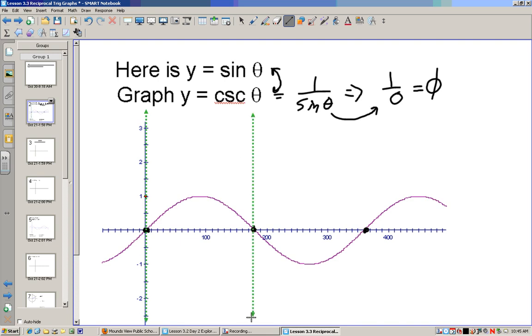So our graph of cosecant is going to be undefined at those points. So what I'm going to do is draw these vertical lines that we call asymptotes.